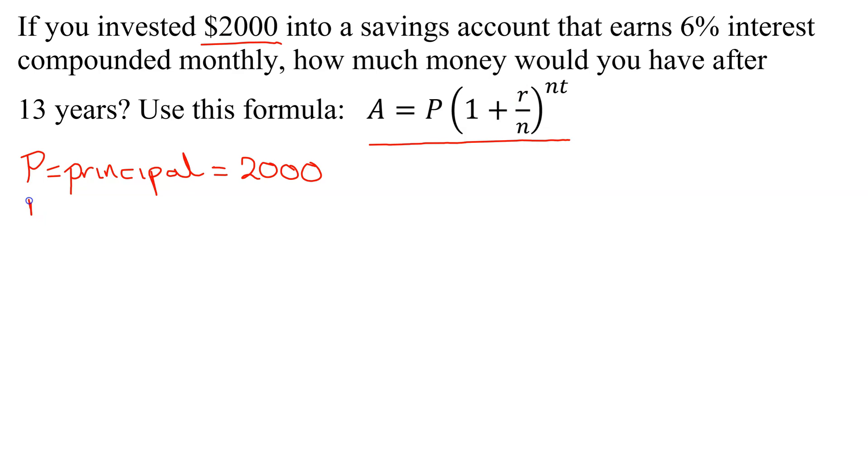Next is R. Remember, R is the interest rate, the annual interest rate. But you cannot use the percentage. You have to turn it into decimal form. So 6%, you take off the percent sign. Here's the decimal point. You move it two places to the left to get it in decimal form. So the interest rate is 0.06.